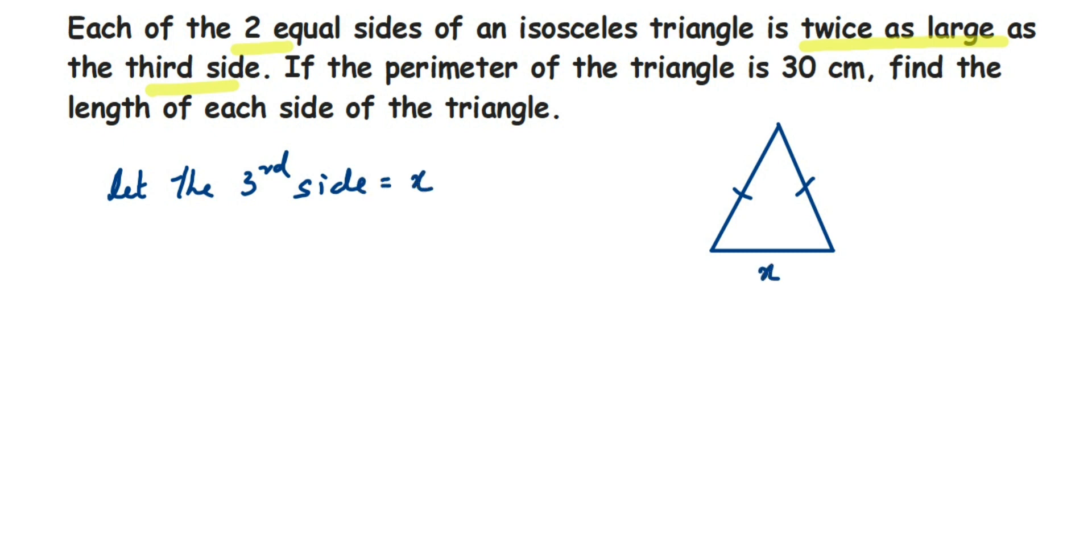So this will be x. So this means the equal side, that is this side and this side, are twice. Twice means two times, two into x. So the equal side will become 2x. So two equal sides will be equal to, since we have given twice, it will be two times x or 2x.